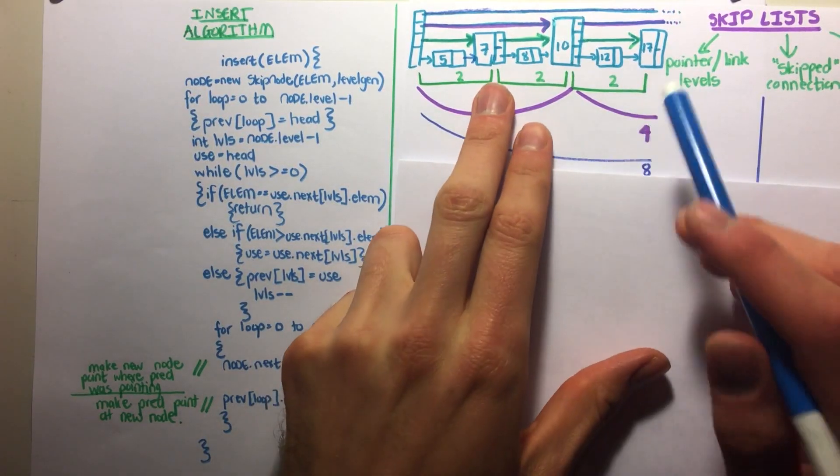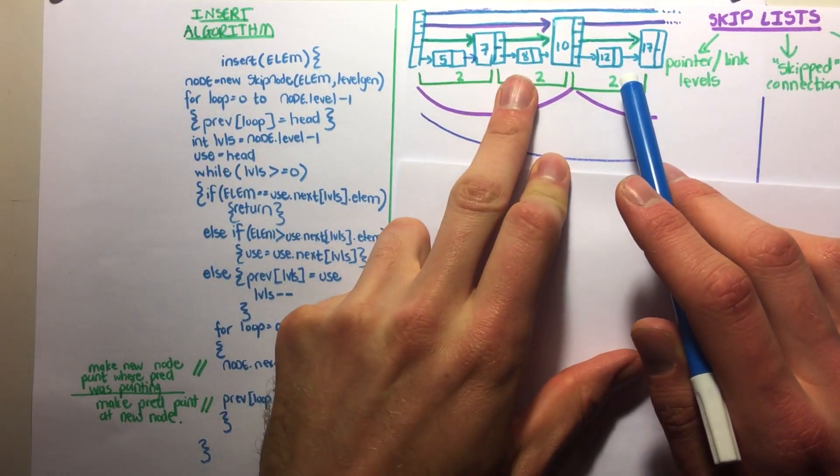So now I'll look at a quick example. Just to clarify everything, we say we want to insert the number 9.